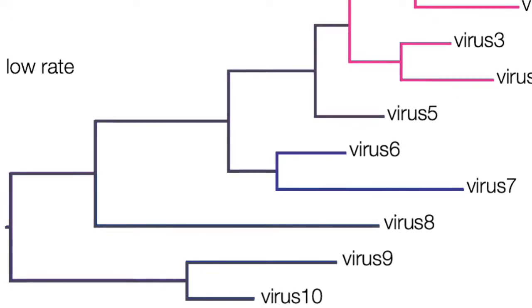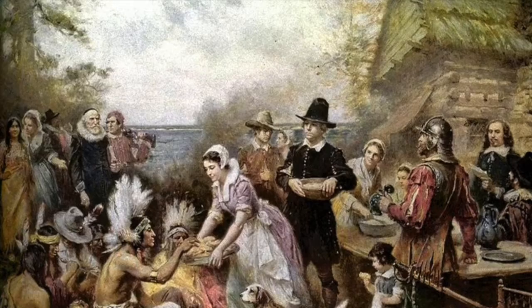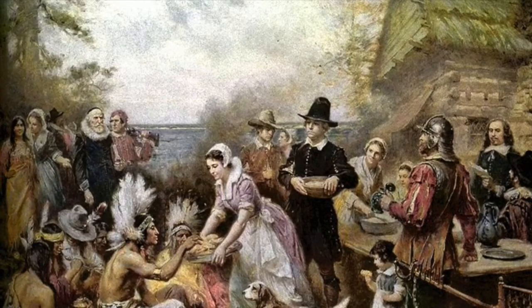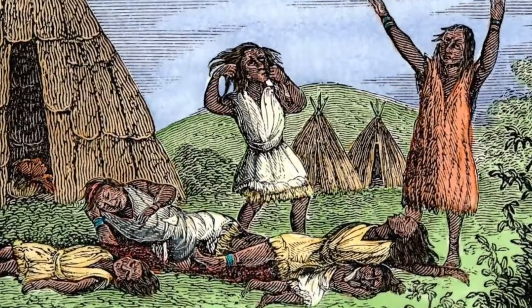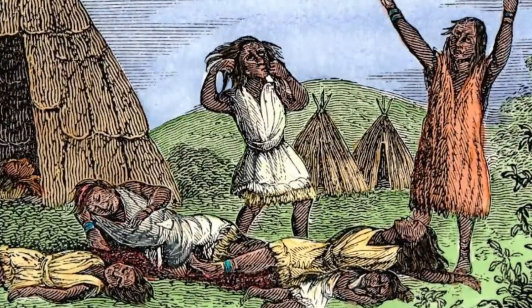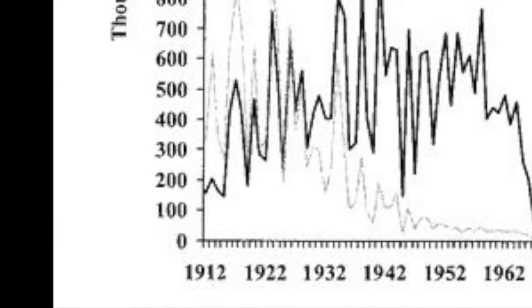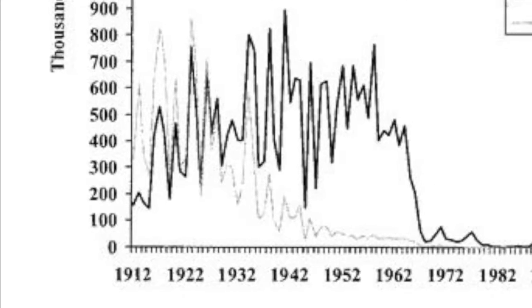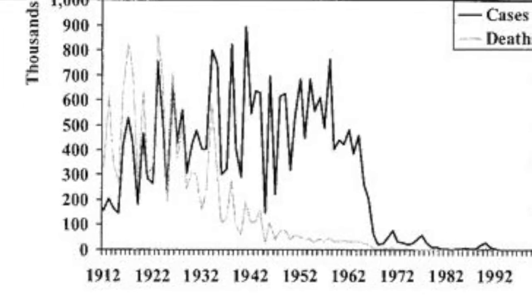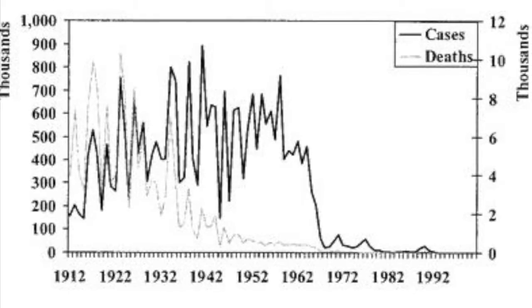According to an article by Hinman and others in the Journal of Infectious Diseases, measles was brought to the New World by European colonists and caused epidemics in the native populations, the first outbreak being reported in 1765. Routine reporting of measles cases in the U.S. began in 1912. The graph from the journal shows that the number of measles cases and deaths was rather high for the first half of the 20th century. Due to improved treatment and elimination efforts, the numbers approached zero after 1970.